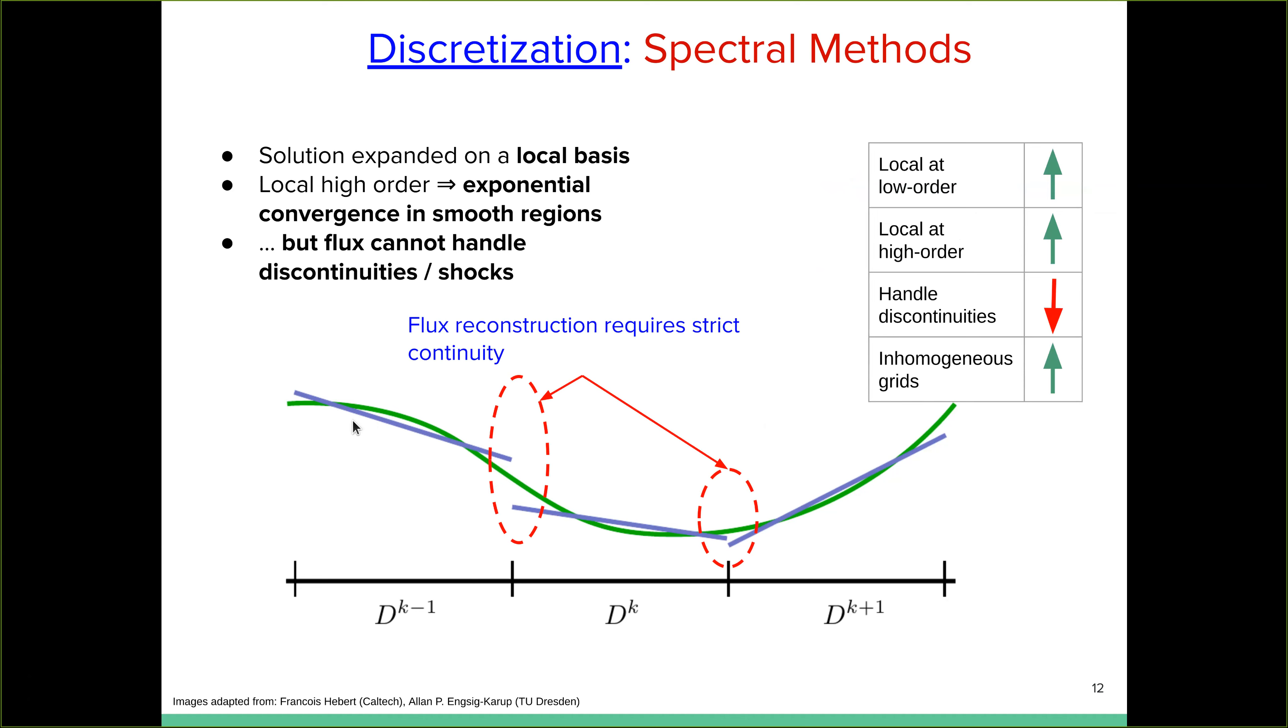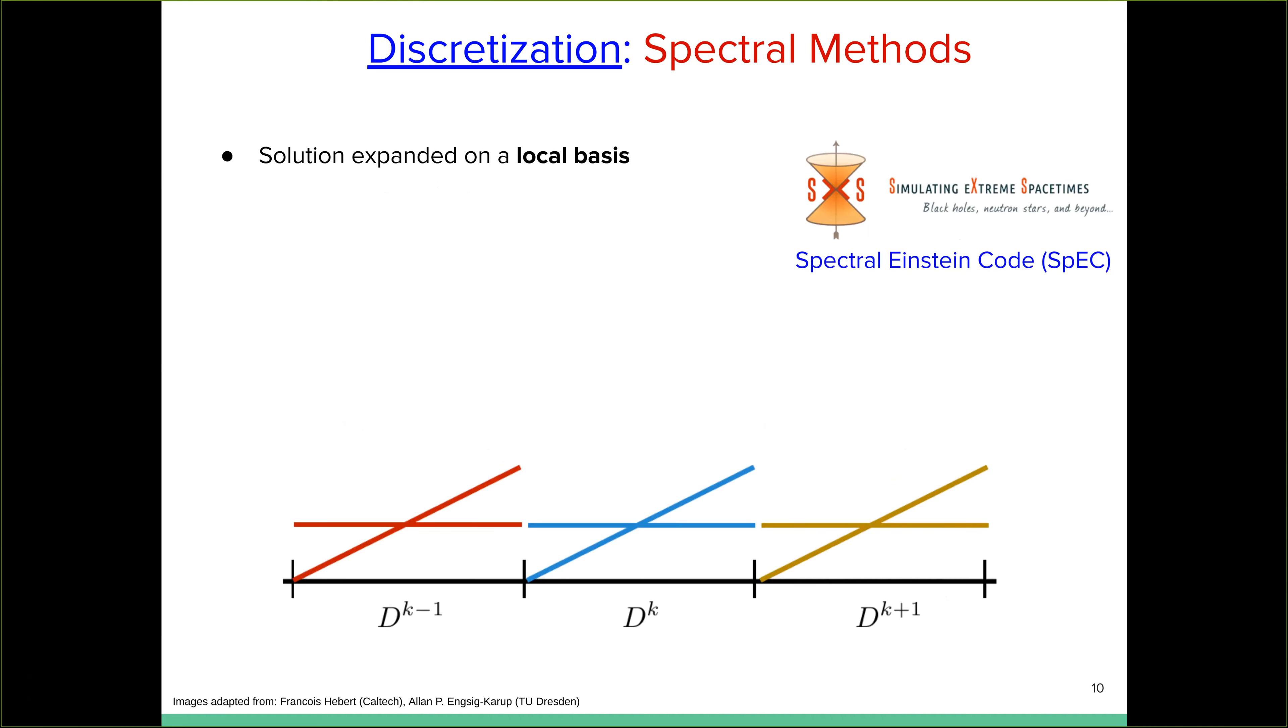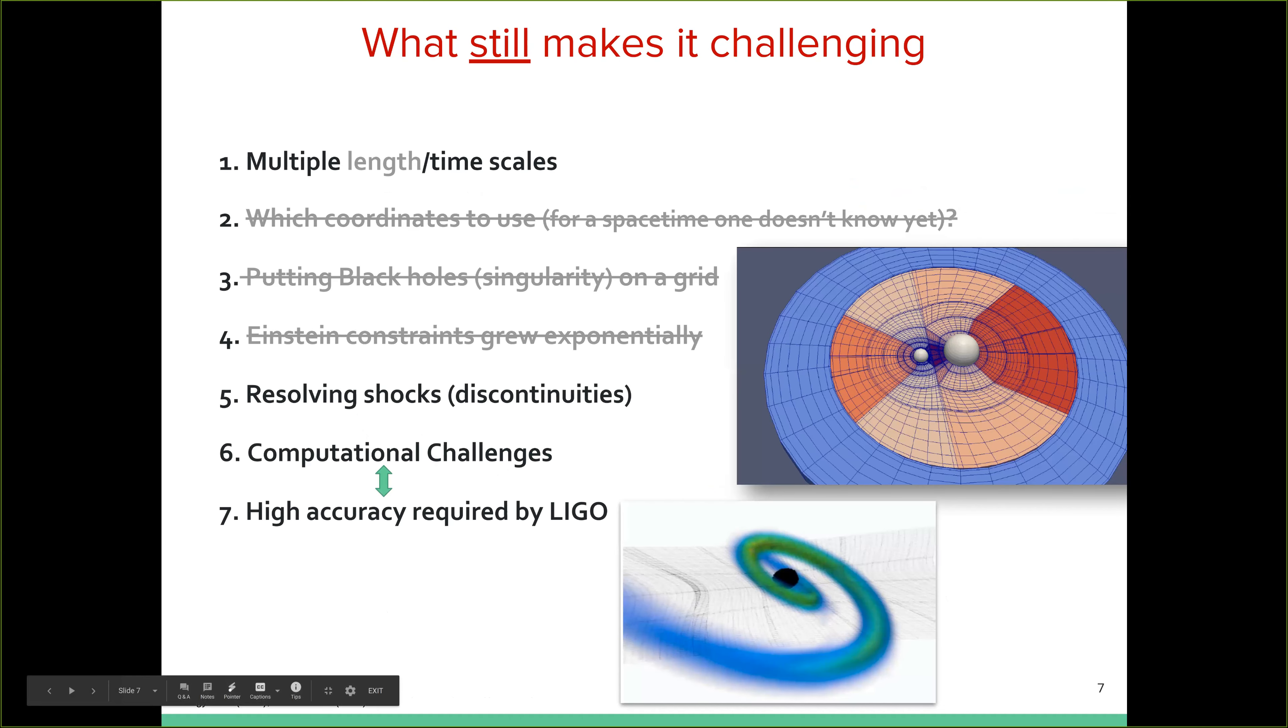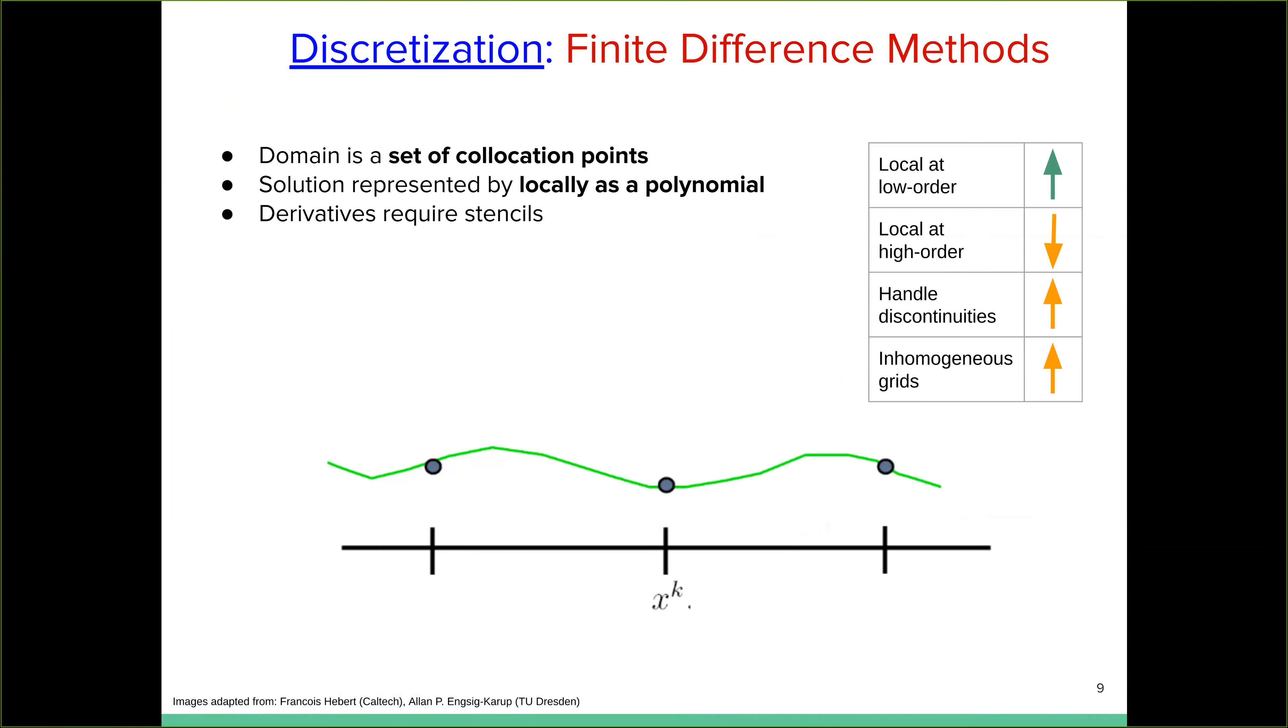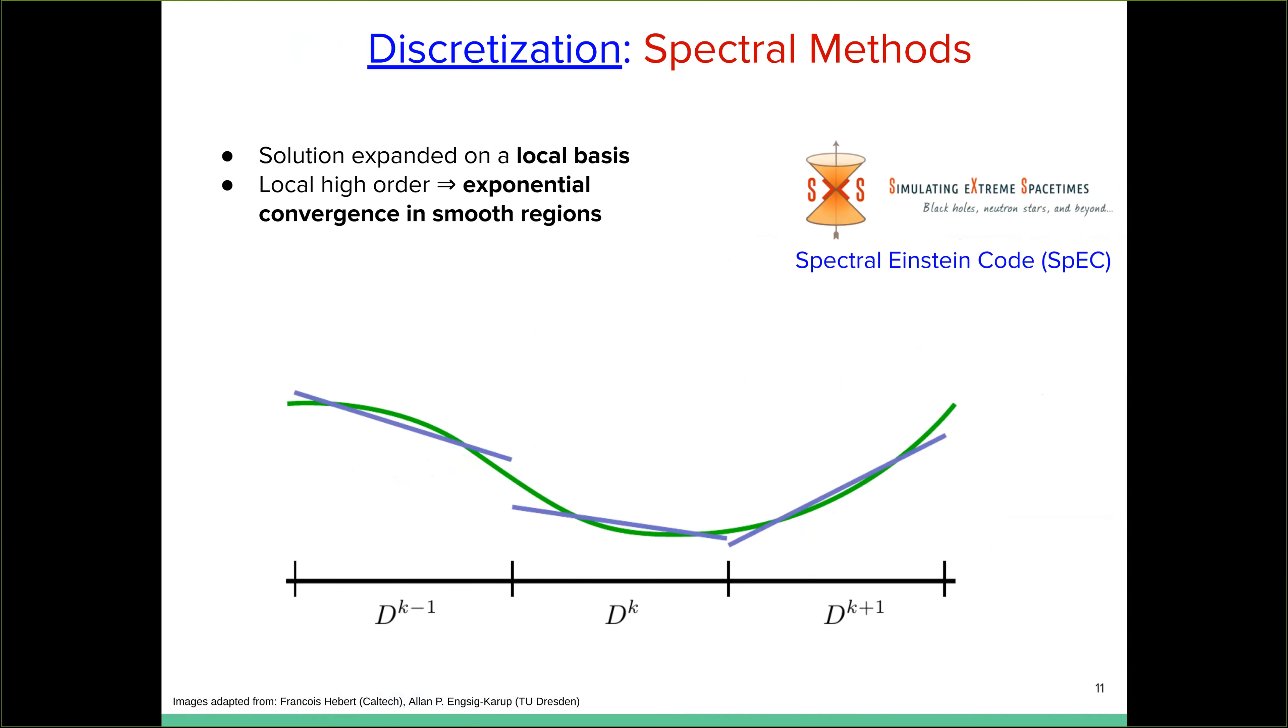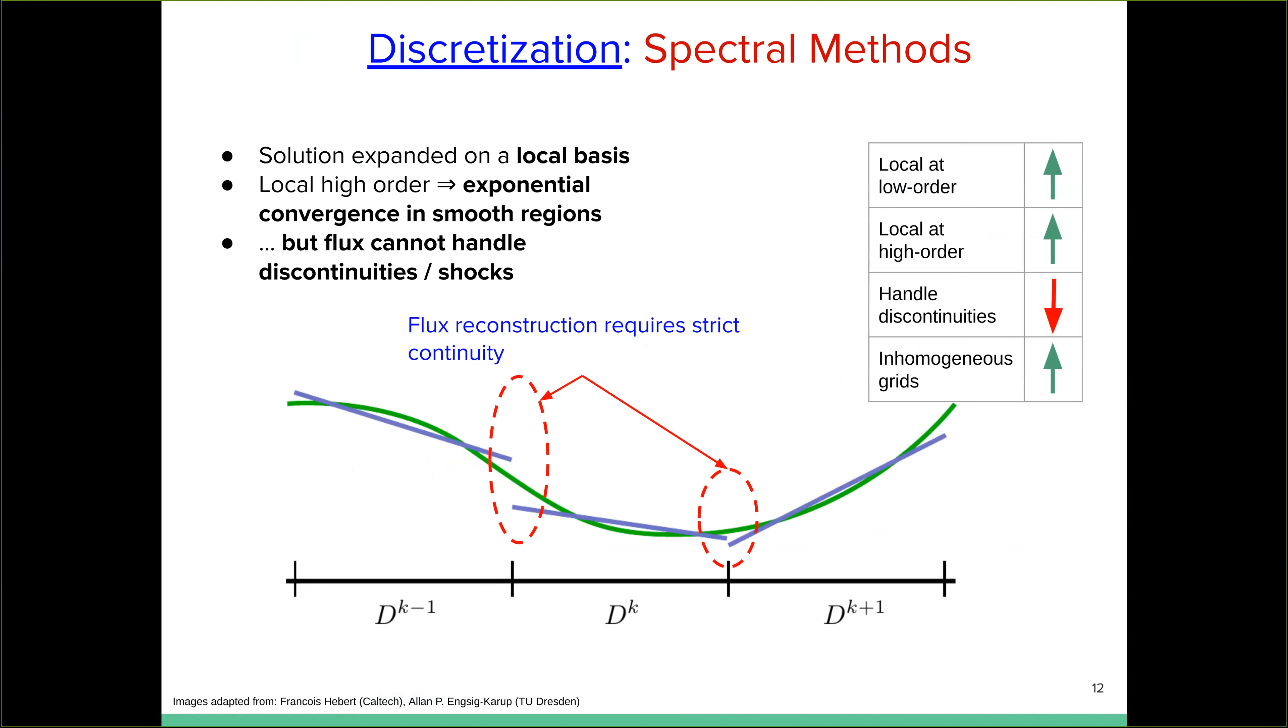Right. So it doesn't, it's not able to handle discontinuities at all. And in fact, if discontinuities form, it destroys the solution globally. So for example, when we were doing simulations of the neutron star being ripped apart by the black hole, we actually had two different grids. The space-time was evolved on a spectral grid while the matter equations were being solved on a finite volume, a finite difference grid, actually. And they would communicate with each other at every time step, making our GRMHD simulations very, very slow.